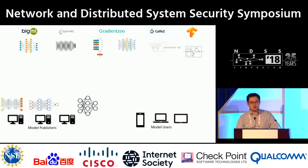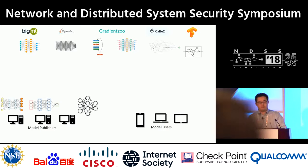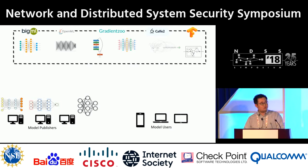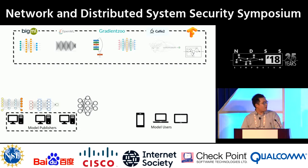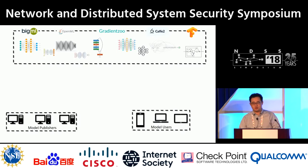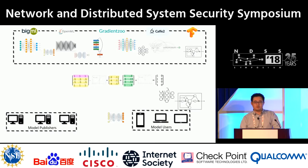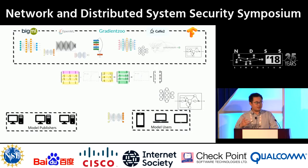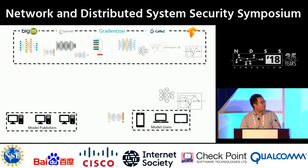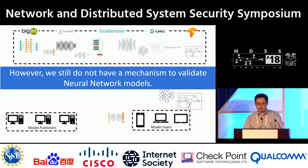Now I'm going to show you the normal case of online model sharing. There are three parties: the online sharing market, the model publishers, and the model users. The model publishers publish their model to the online market, and the users download and deploy them. However, the downloaded neural networks are just simply matrices connected in a specific structure — meaning it's very hard to reason about them. So far, we still do not have a mechanism to validate neural network models, and that raises a great security problem.